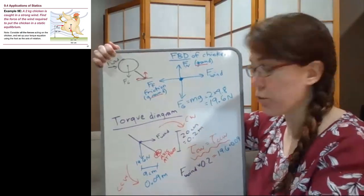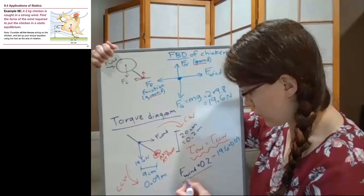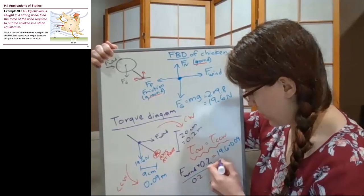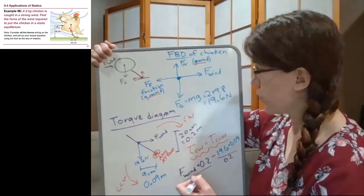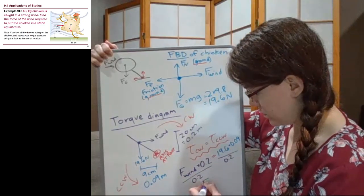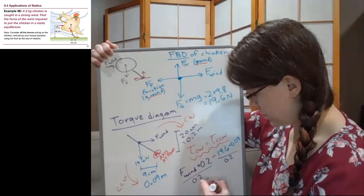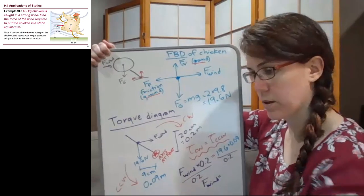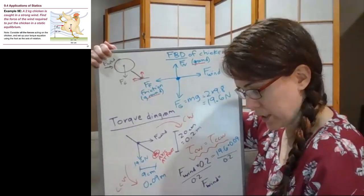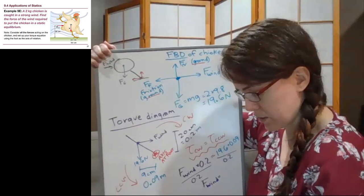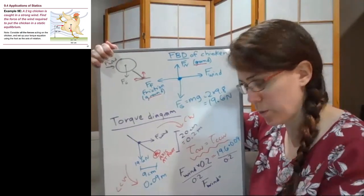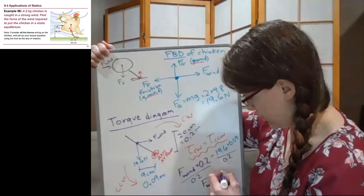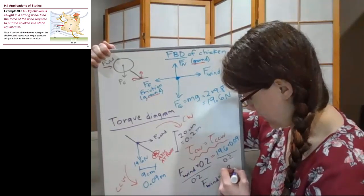And so to solve for our unknown wind force, we just divide both sides by 0.2. And so our wind force, we just use our calculator, 19.6 times 0.09 divided by 0.2, and we will get 8.8 newtons.